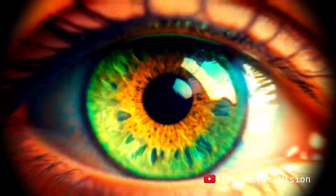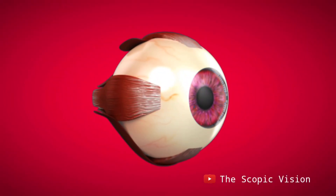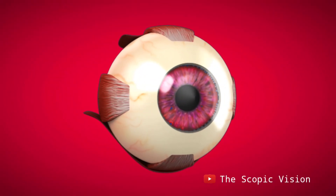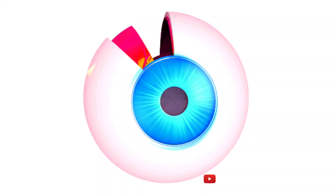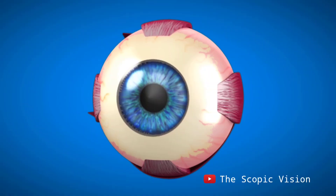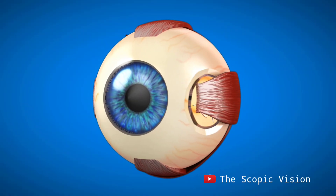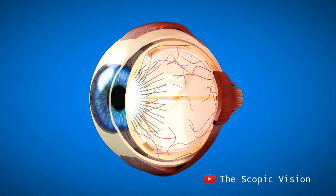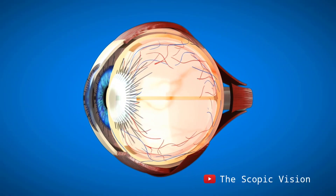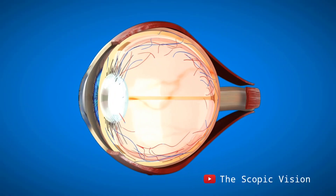The human eye is a specialized sense organ that has the ability to receive visual images and deliver them to the brain. A horizontal cross-section view of the eye shows us some major parts.